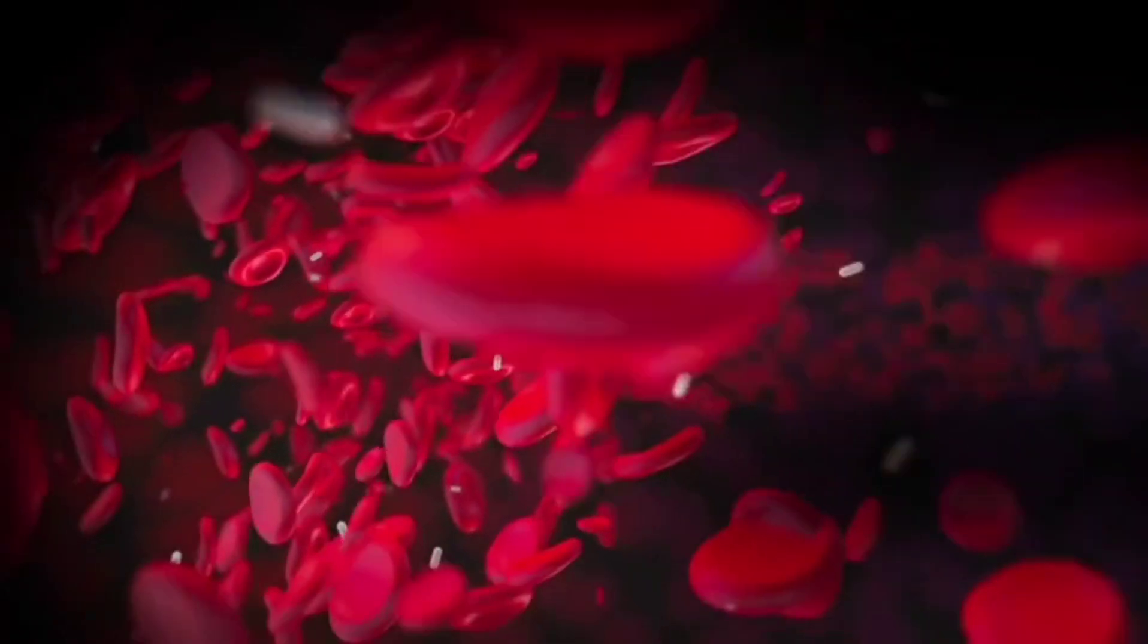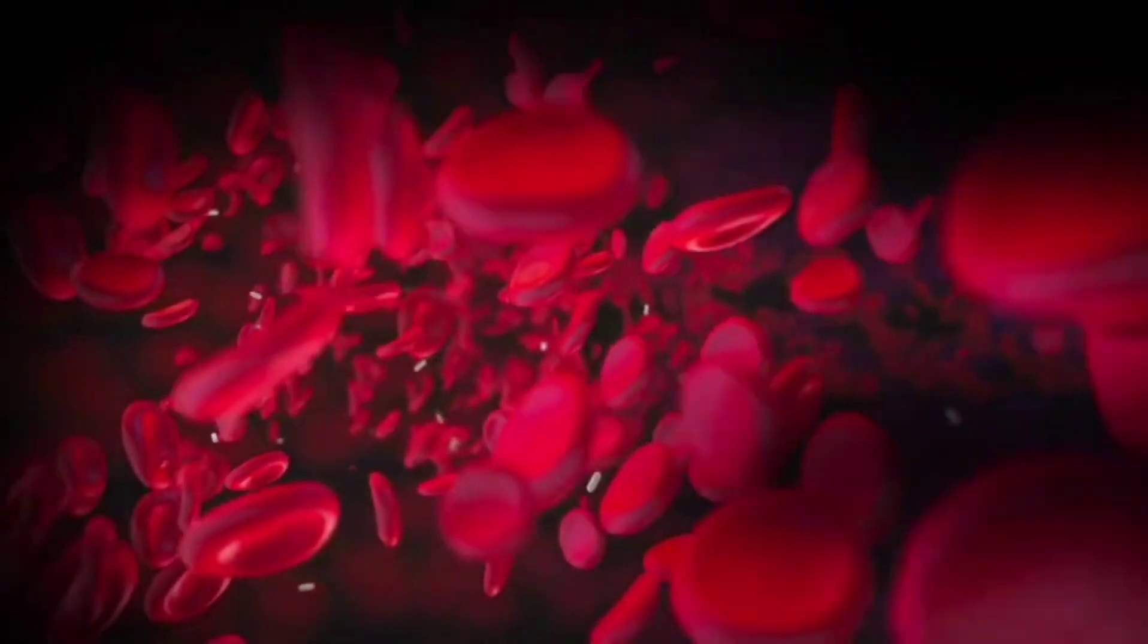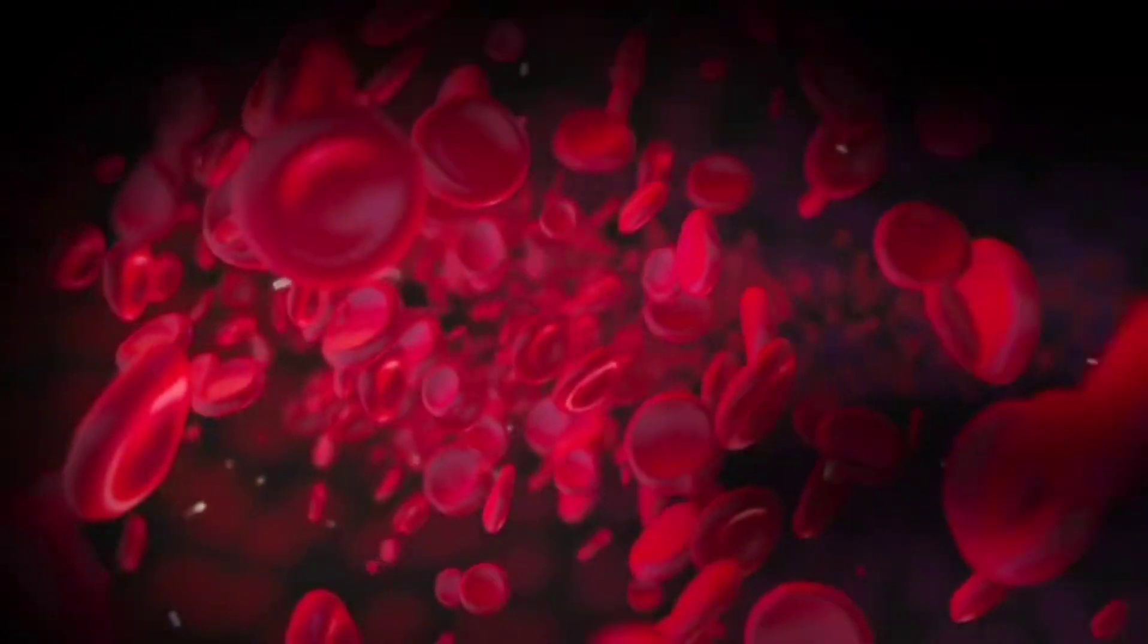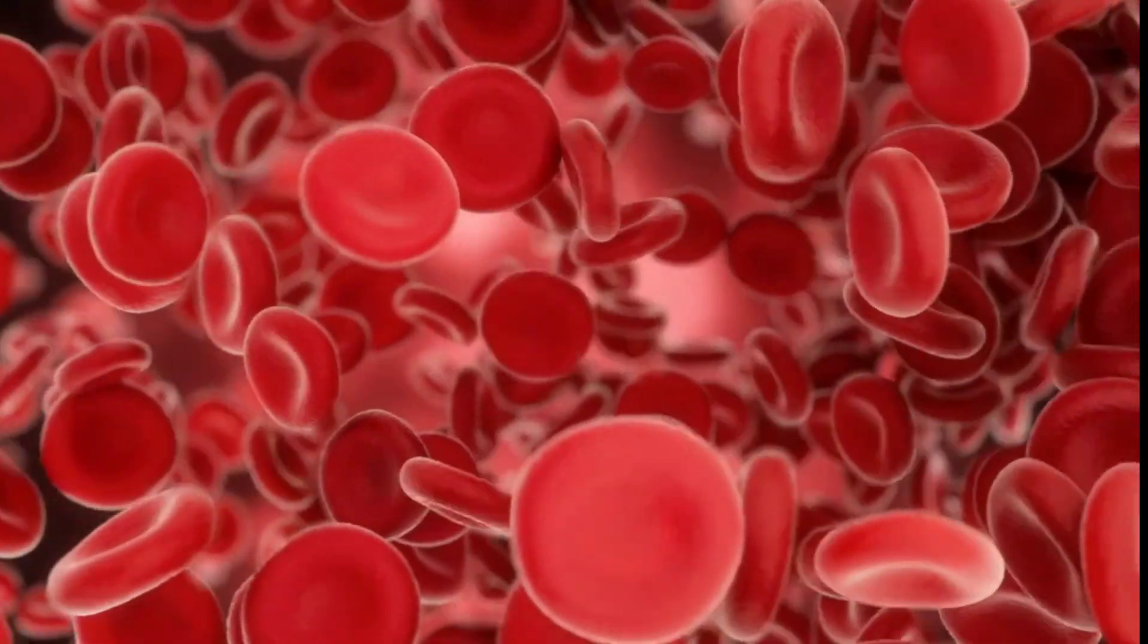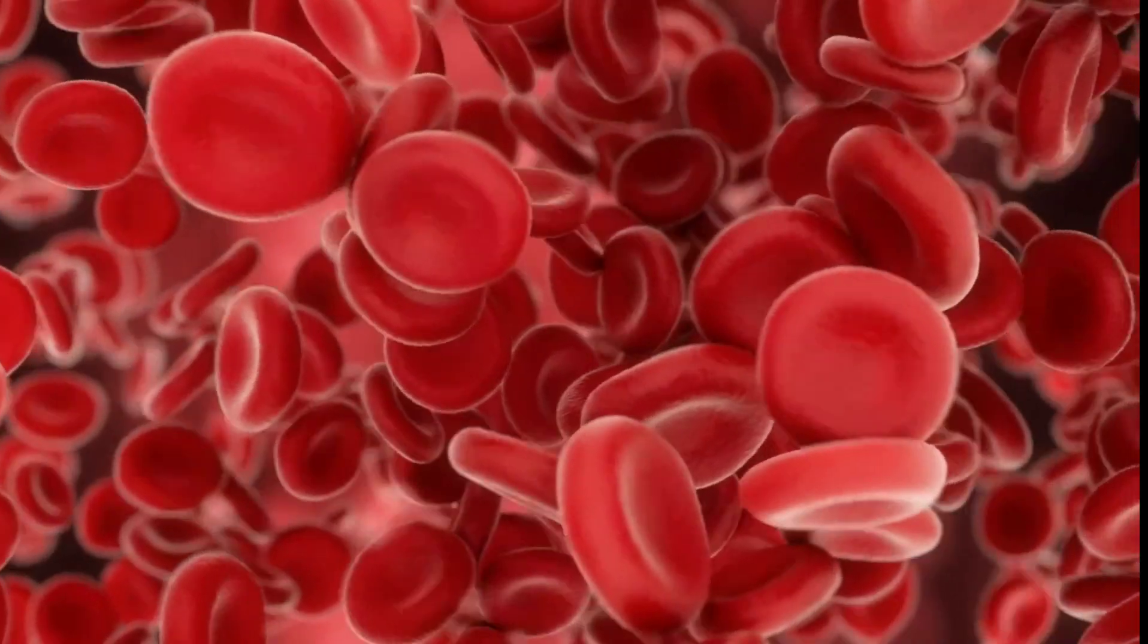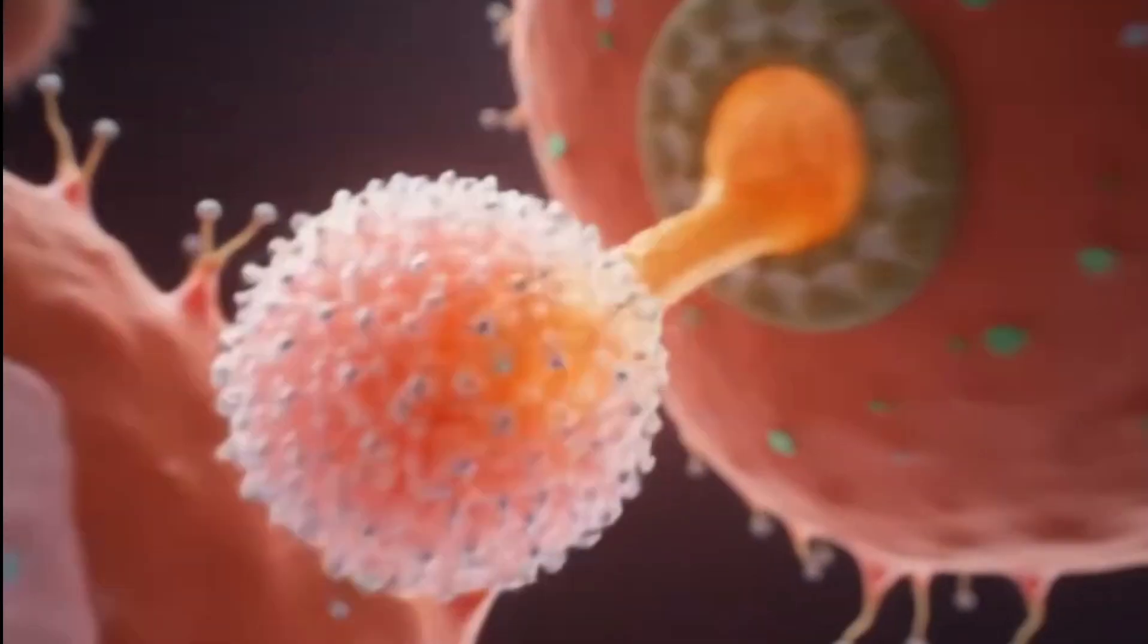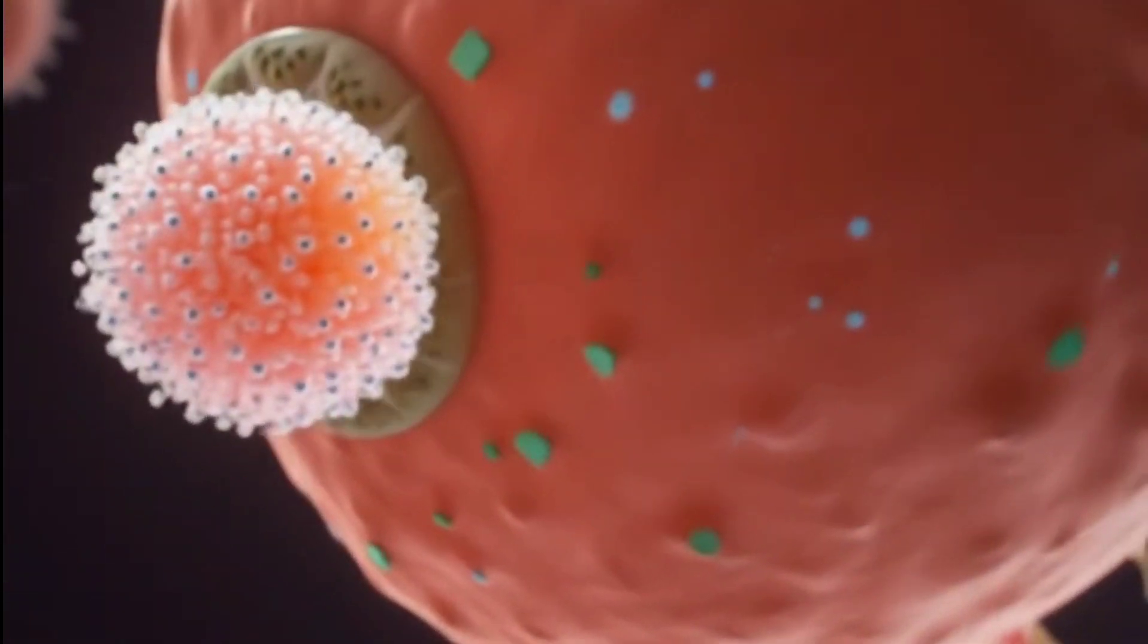Fact 24. AB people are often called universal recipients, but only for red blood cells. It's important to make a clear distinction. AB individuals can receive red blood cells from anyone. But when it comes to plasma, it's the opposite. AB is the universal donor. This confuses people sometimes, so it's good to understand the difference. Red cells and plasma play different roles. And AB handles both in unique ways.